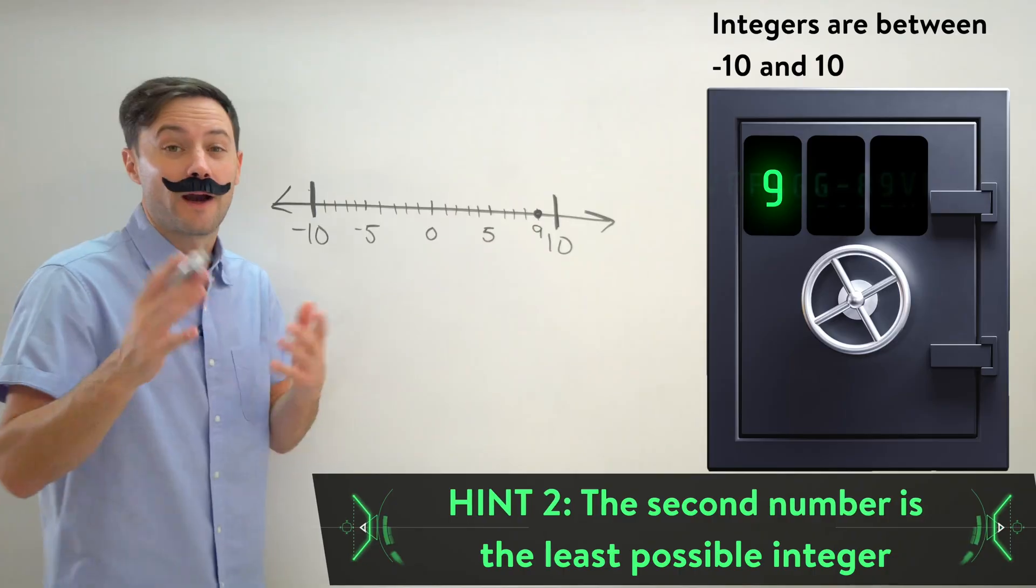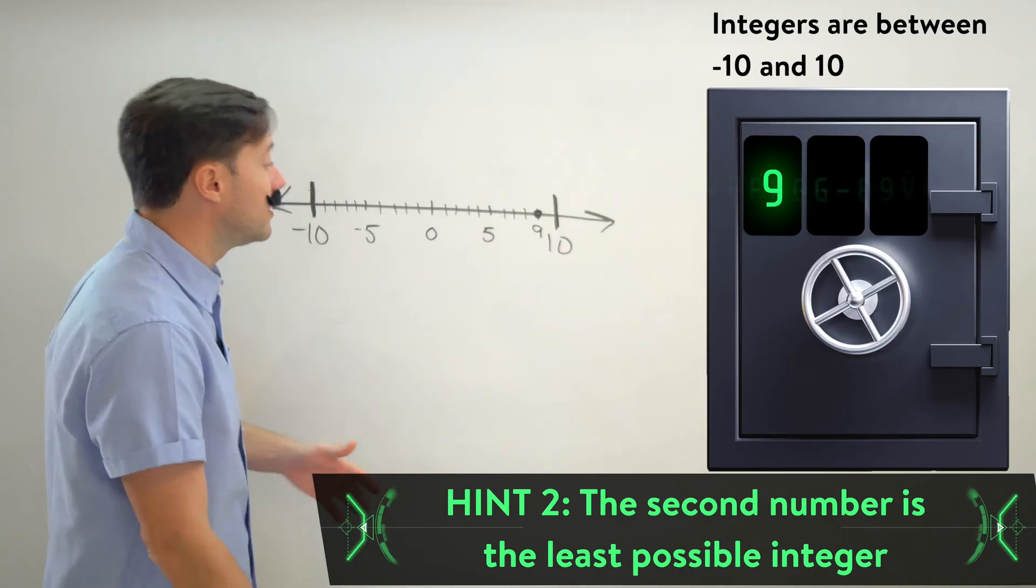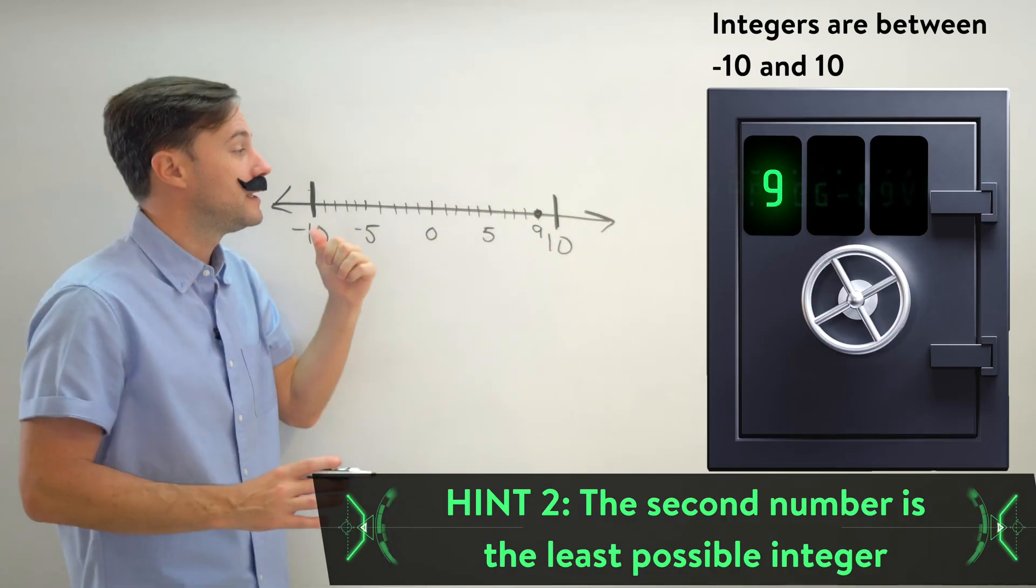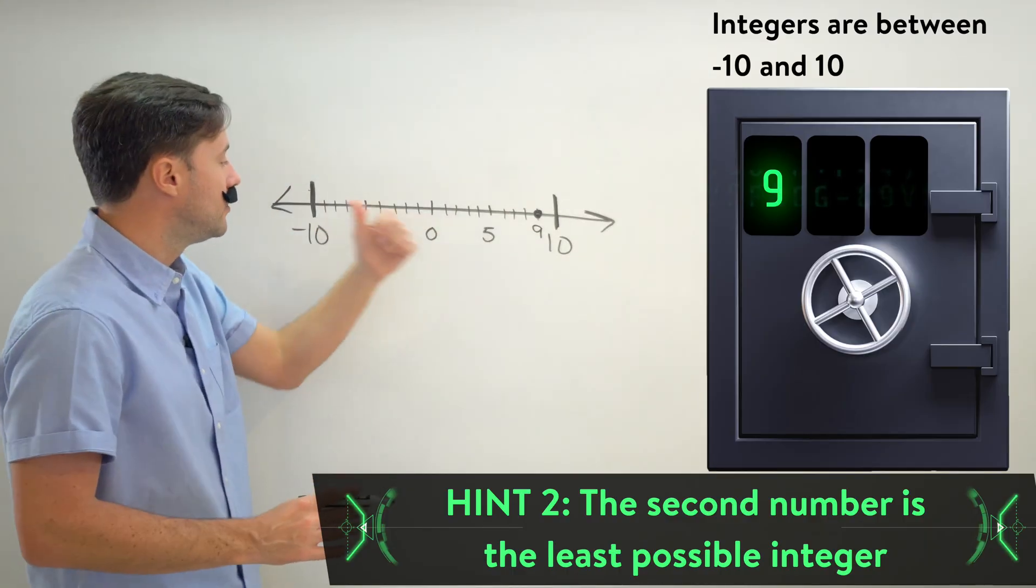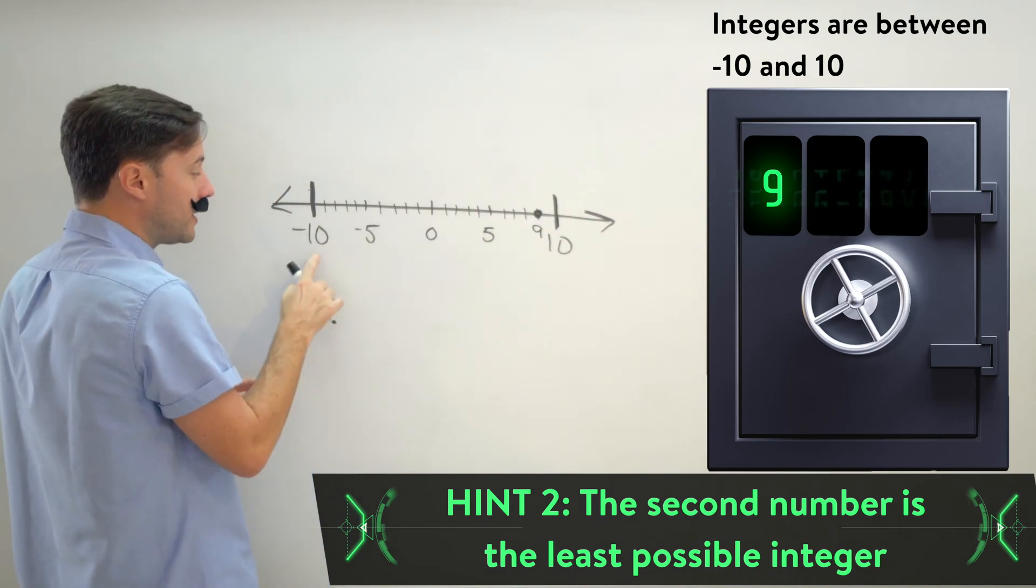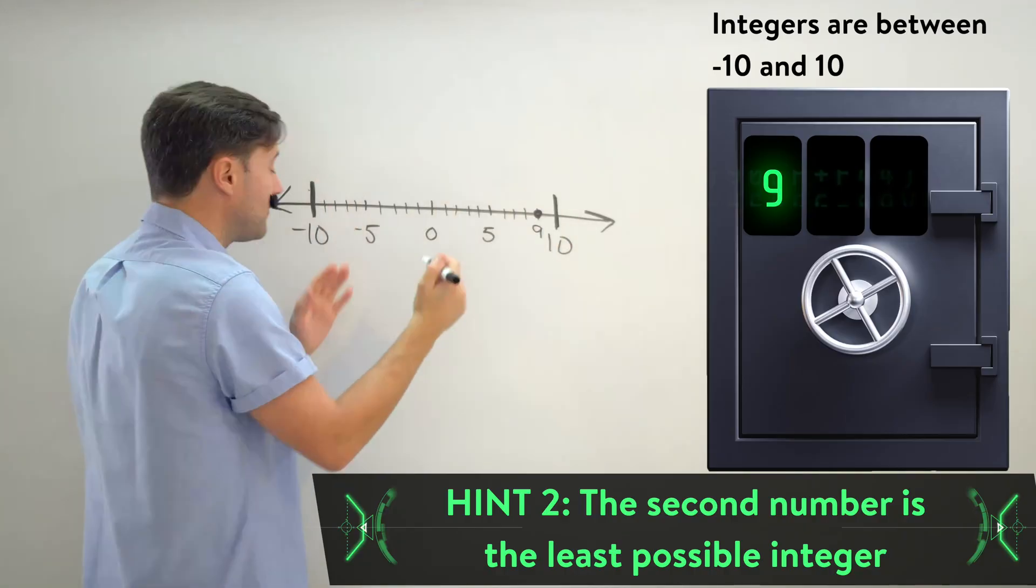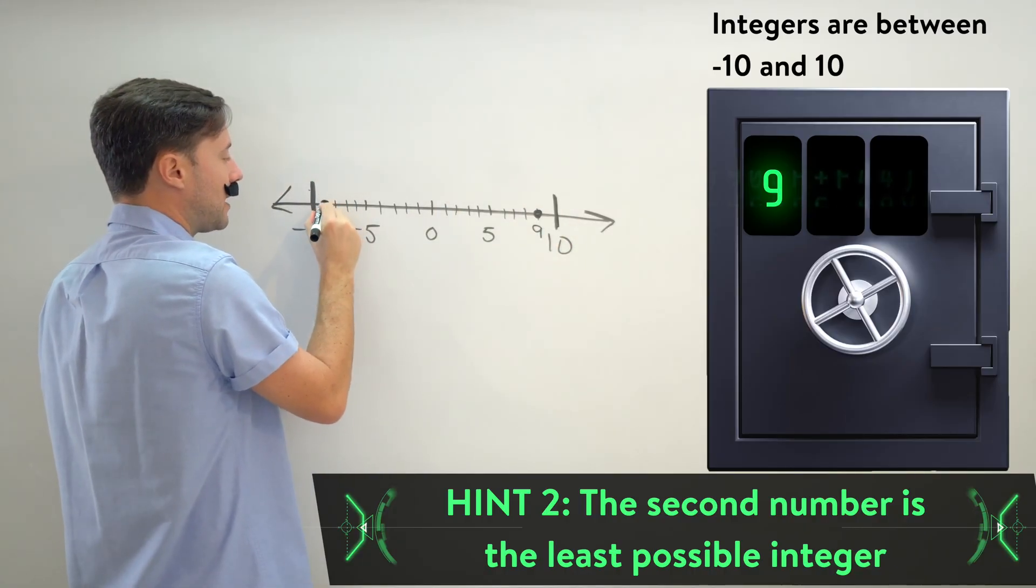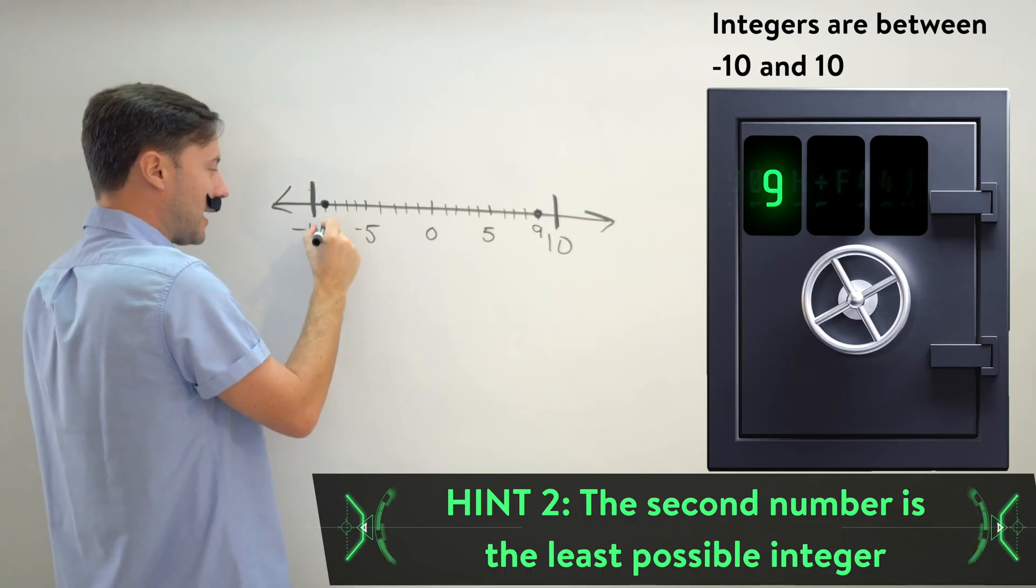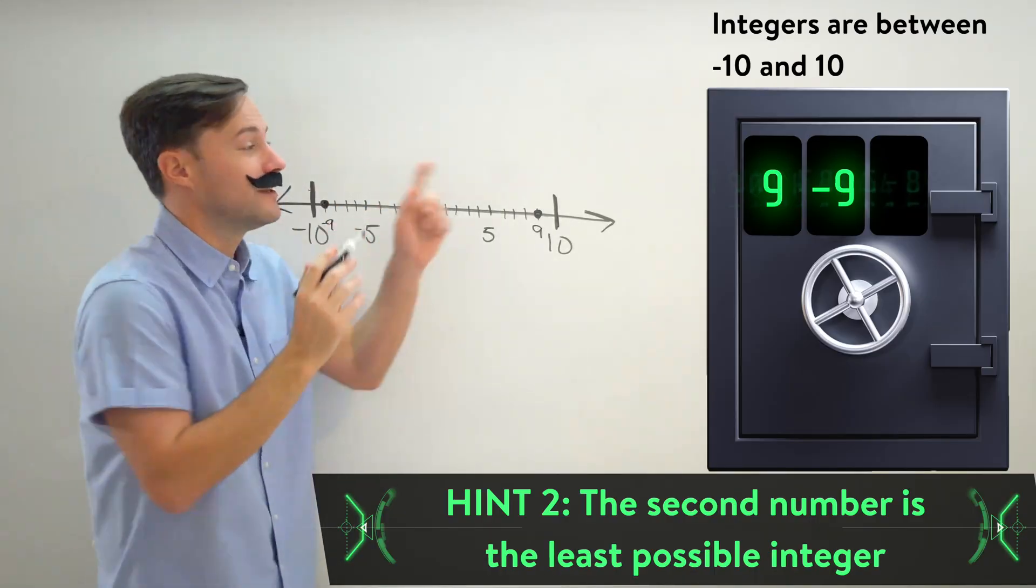Let's look at the second hint. All right, the second hint is the second digit is the least possible integer value. So instead of going farthest to the right, now we're going farthest to the left because the values decrease as you move farther to the left on the number line. So the farthest left we can go, we can't go all the way to negative 10 because it's got to be in between them. So that means right here would be my least, and that's negative five, negative six, negative seven, negative eight, negative nine. That would be negative nine. So negative nine is our second value in the combination.